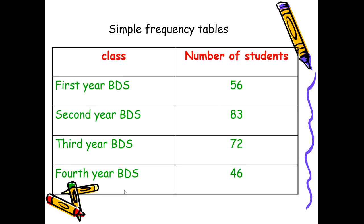Moving forward, the first presentation is the formation of a simple frequency table. For example, a researcher conducted research on BDS students and wants to describe how many students participated and which class they belong to. He made a table showing four classes of BDS and the number of students in each — a classical example of a simple frequency table. This is qualitative, categorical, and ordinal data since there is an order from first to fourth year.